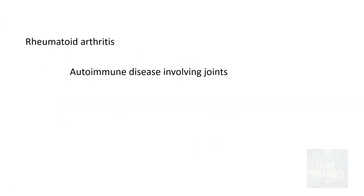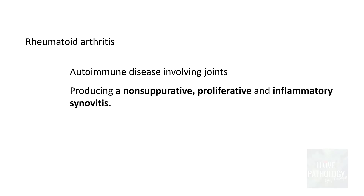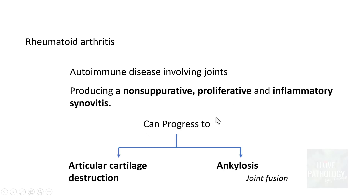Rheumatoid arthritis is an autoimmune disease which involves joints — as the name says, arthritis — producing a non-suppurative, proliferative, and inflammatory synovitis. If not tackled early, it can progress to articular cartilage destruction and fusion of the joints, which is referred to as ankylosis.